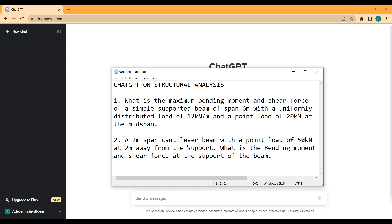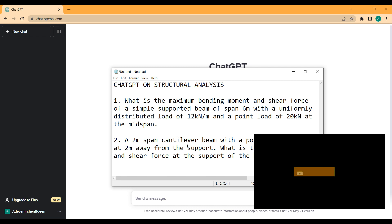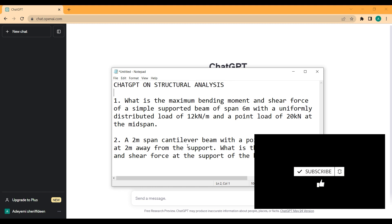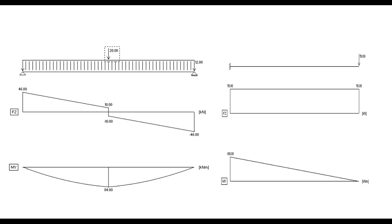If this is your first time on Chef in Academia, on this channel we talk about civil engineering design — consider subscribing, liking, and sharing. This is the first beam I want to analyze: a simply supported beam with a UDL of 12 kilonewtons per meter and a point load of 20 kilonewtons at the mid-span. I want to check ChatGPT's capability to analyze this so structural engineers can make use of the latest technology.